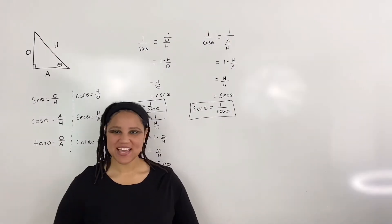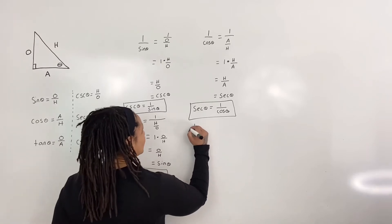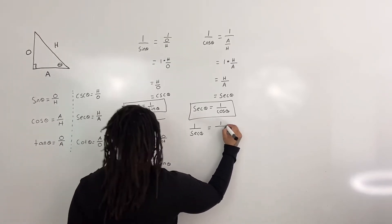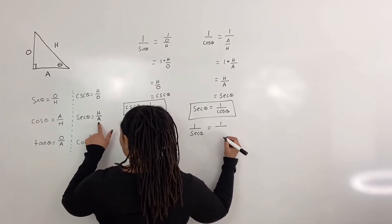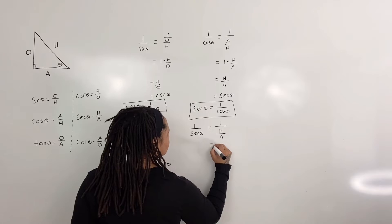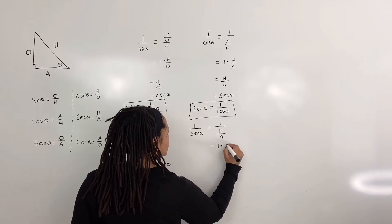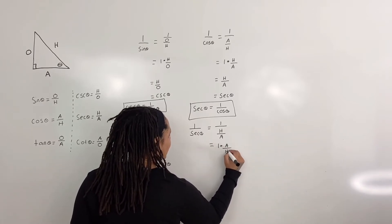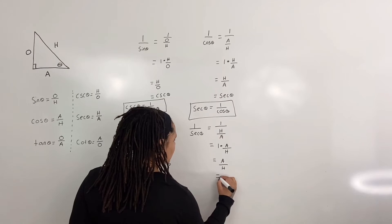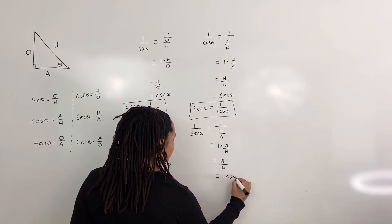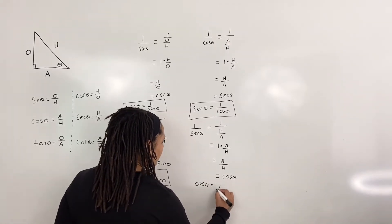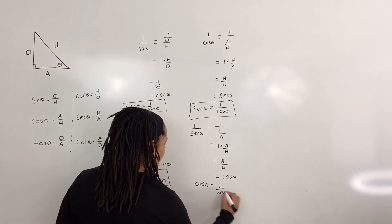Thus secant of theta is equal to 1 over cosine of theta. And now going the other way, 1 over secant of theta is equal to 1 over hypotenuse over adjacent, which is equal to adjacent over hypotenuse, which is equal to cosine of theta. Thus cosine of theta is equal to 1 over secant of theta.